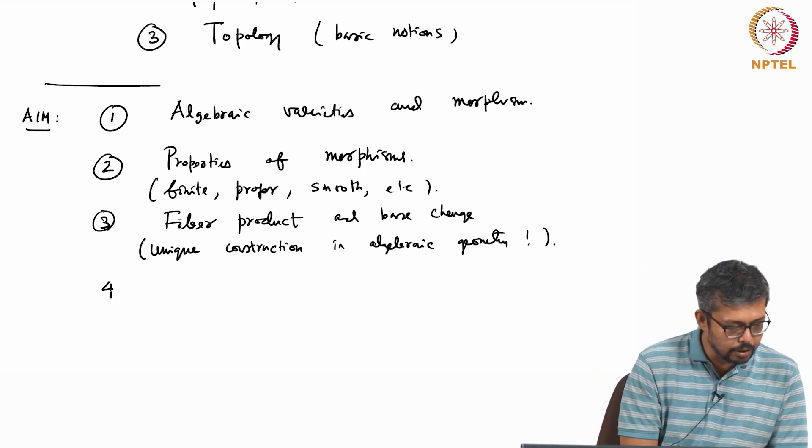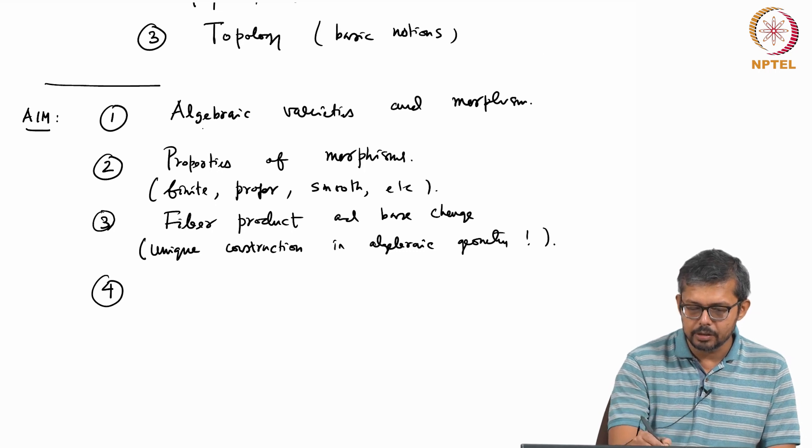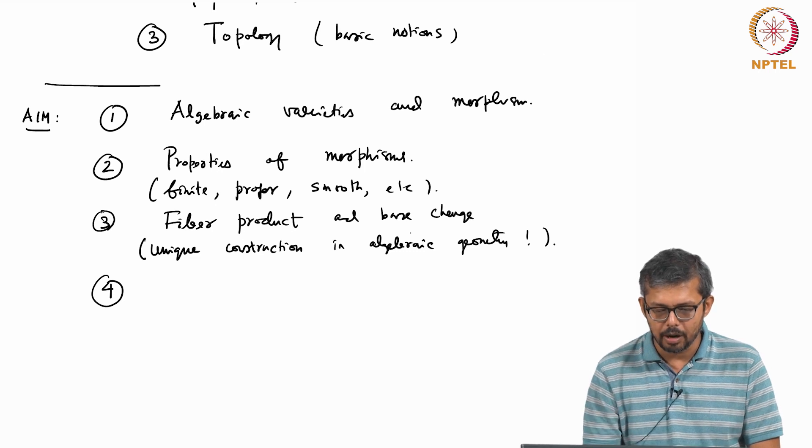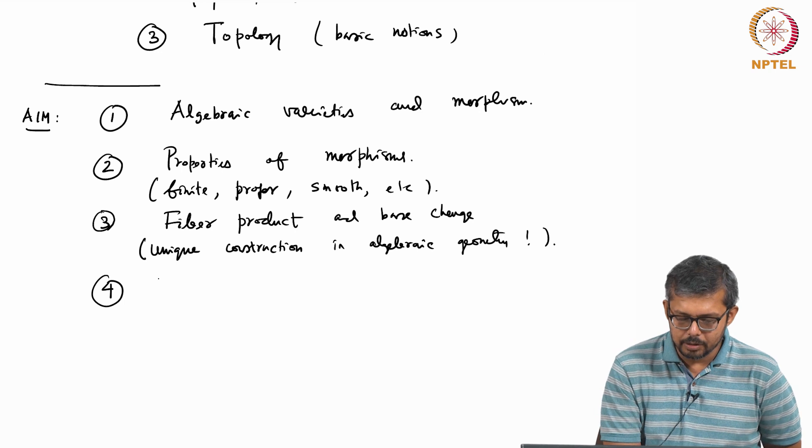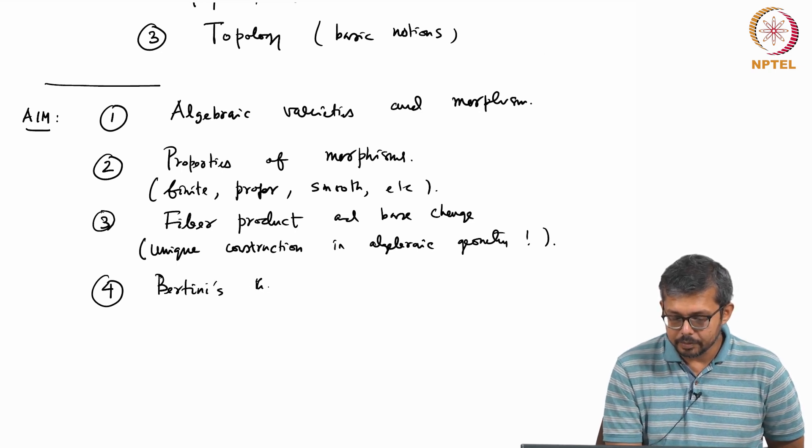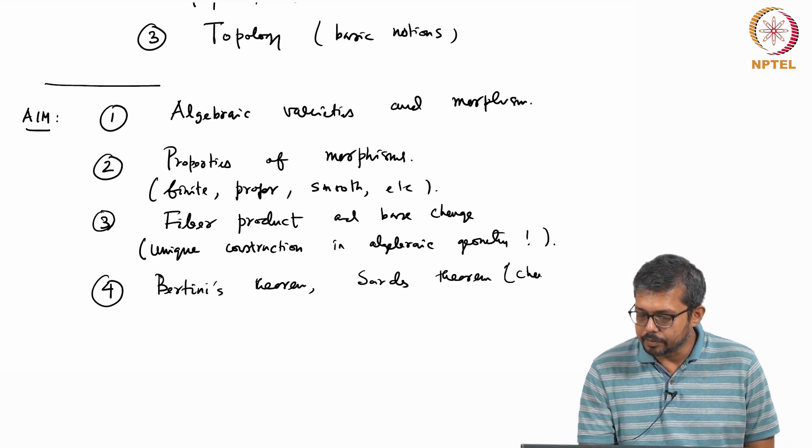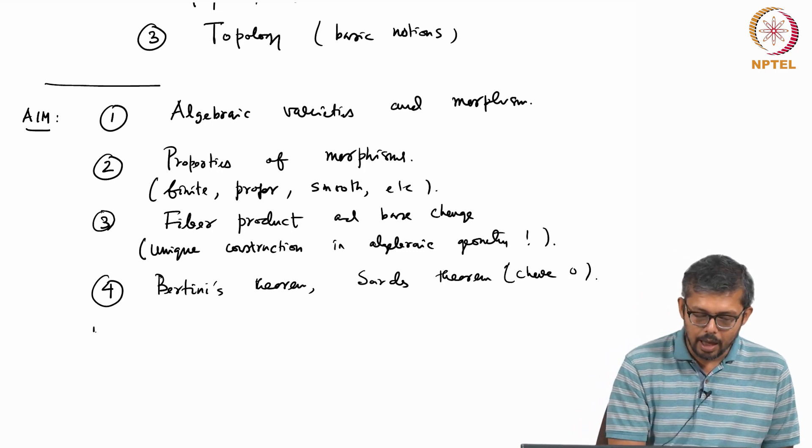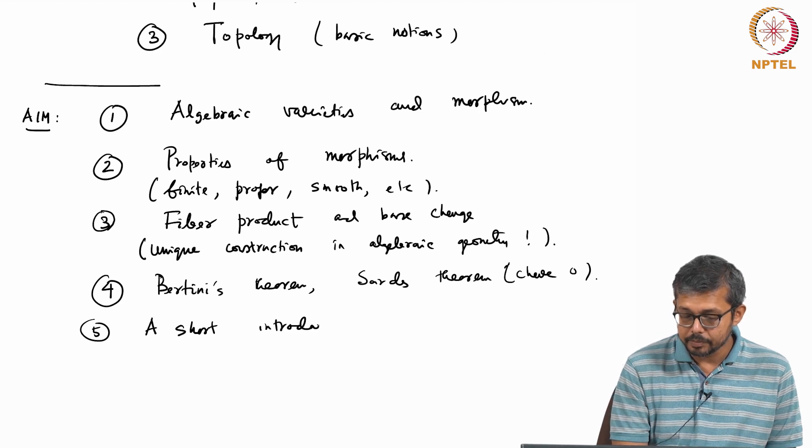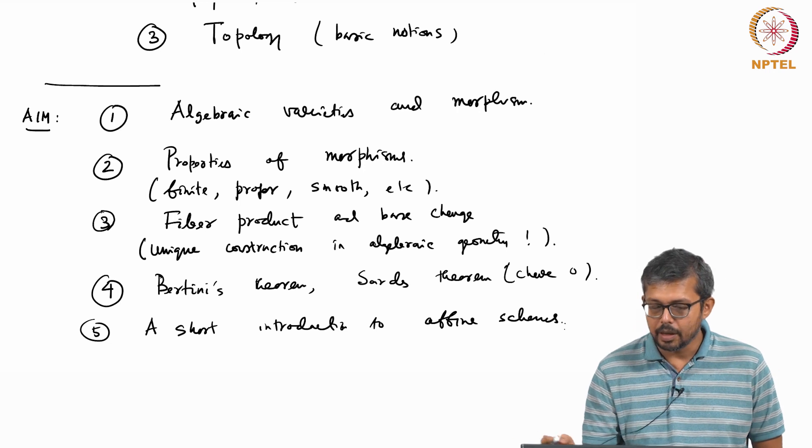And then fourth, we will study some theorems. I will try to cover some of the theorems because these three parts will take most of the time. We will try to cover some theorems like Chevalley's theorem or Bertini's theorem, Chevalley's theorem in algebraic geometry. This is in characteristic 0, there is no Chevalley's theorem in characteristic p. And fifth, at last we will give a short introduction to scheme - to mostly affine schemes - and we will finish the course here.